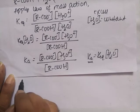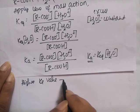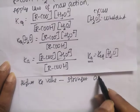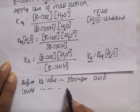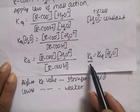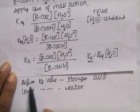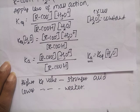The conclusion is: higher the Ka value, stronger will be the acid. Lower the Ka value, weaker will be the acid. Based on the dissociation constant, we can predict whether an acid is strong or weak. If Ka has a higher value, the acid is stronger; if Ka has a lower value, the acid is weaker.